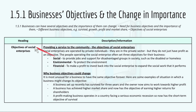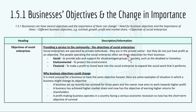Then we have objectives of social enterprises, providing a service to the community. Social enterprises are operated by private individuals — they are in the private sector — but they do not just have profit as an objective. When people operate a social enterprise, they often set three objectives: social, which is to provide jobs and support for disadvantaged groups in society; environmental, to protect the environment; and financial, to make a profit to invest back into the social enterprise.